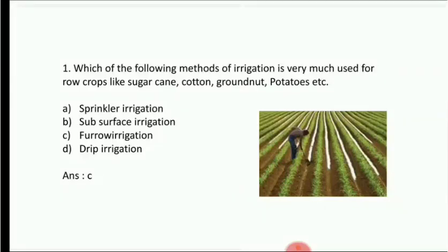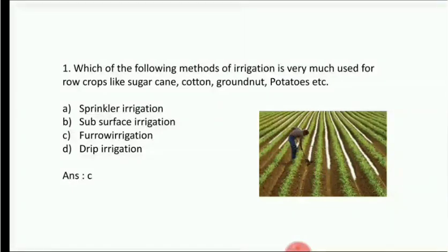Drip irrigation is a type of subsurface irrigation. We use pipes and droplets to drop water. That pipe will be buried in the soil, beneath and above the soil. Subsurface irrigation involves pipes buried to reach the root depth. This question's answer is Option C, furrow irrigation.